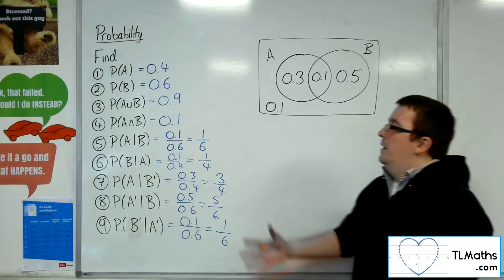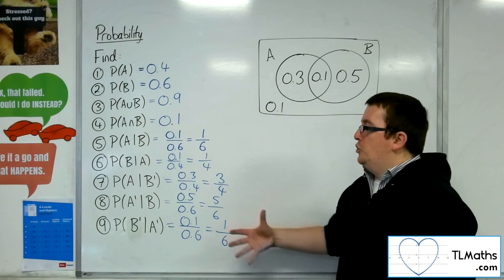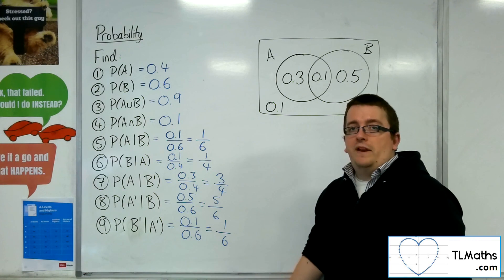Okay, so that is how we can find conditional probabilities from a Venn diagram.